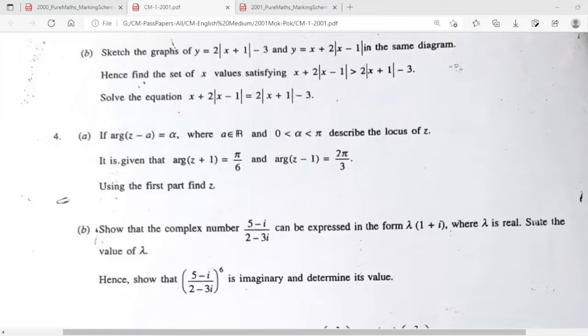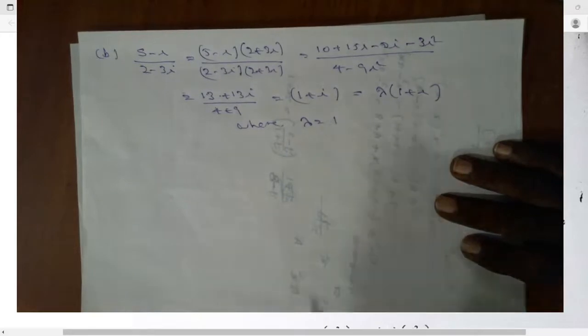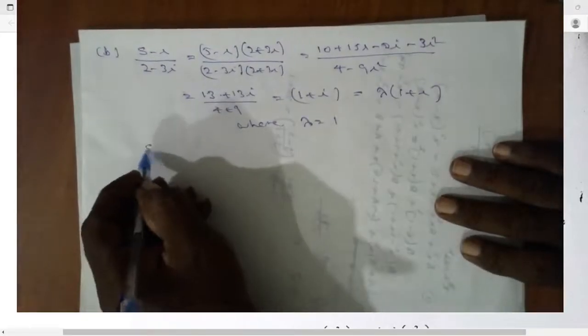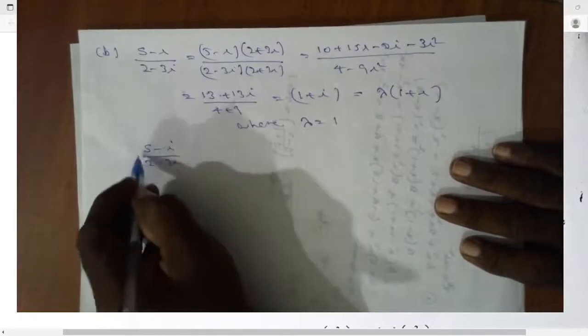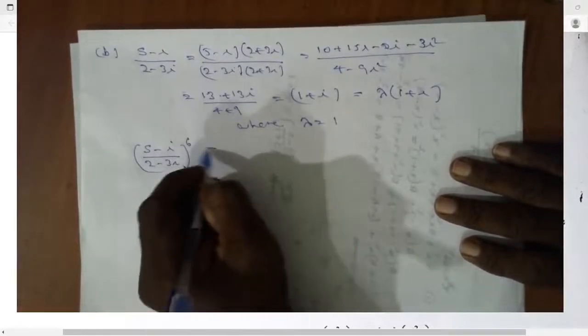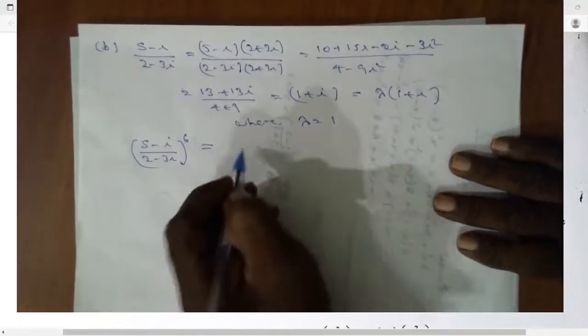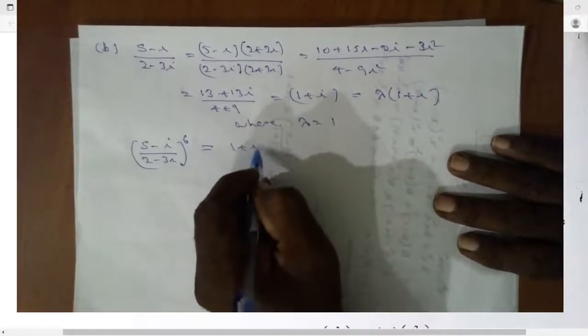Then what is next part? Hence, show that 6th power of this complex number is imaginary. 6th power. What is 6th power of this? 5 minus i, 2 minus 3i, all to the power of 6. That is 1 plus i to the power of 6.